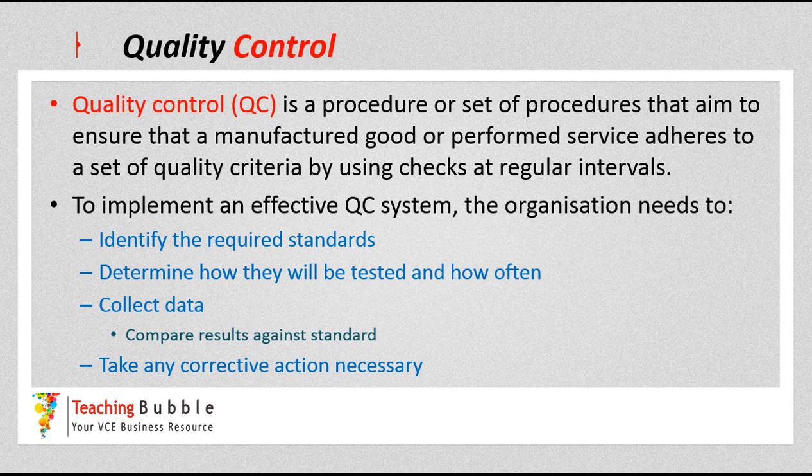This is where the organization will regularly check the products — that could be throughout the operation system, at the end of the operation system, or they might check every product as it goes through each stage. It could be that they check one in every 20 products at the end of the production process, or anything in between. How they check and how regularly they check is up to them, and often depends on the level of quality they're after or the type of product being produced.